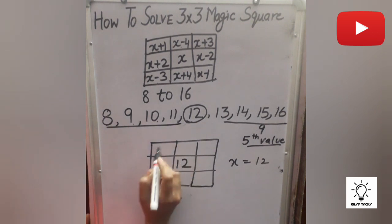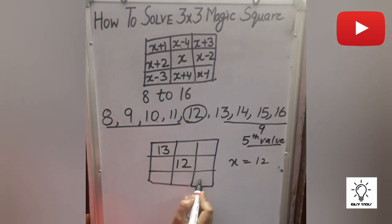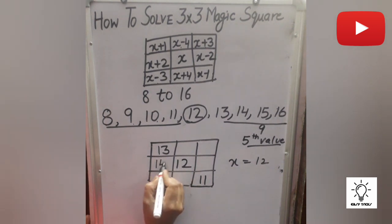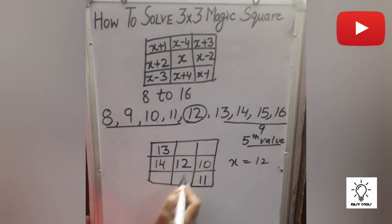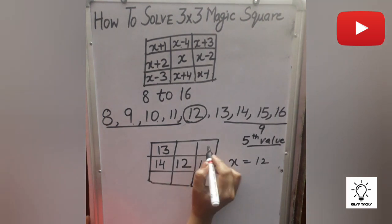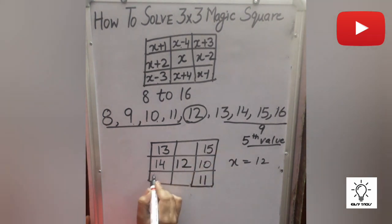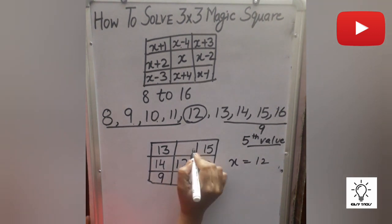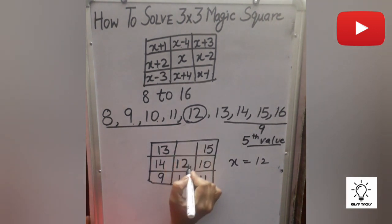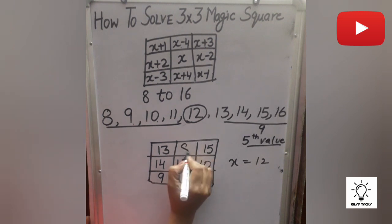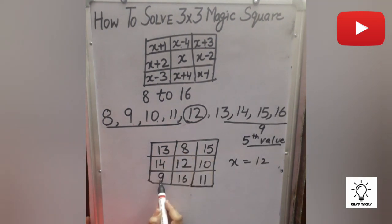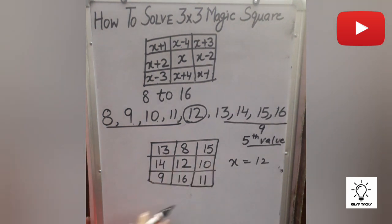Then x+1 is 13, x-1 is 11, x+2 is 14, x-2 is 10, x+3 is 15, x-3 is 9, x+4 is 16, and x-4 is 8. So all numbers — 8, 9, 10, 11, 12, 13, 14, 15, 16 — are placed in the magic box.